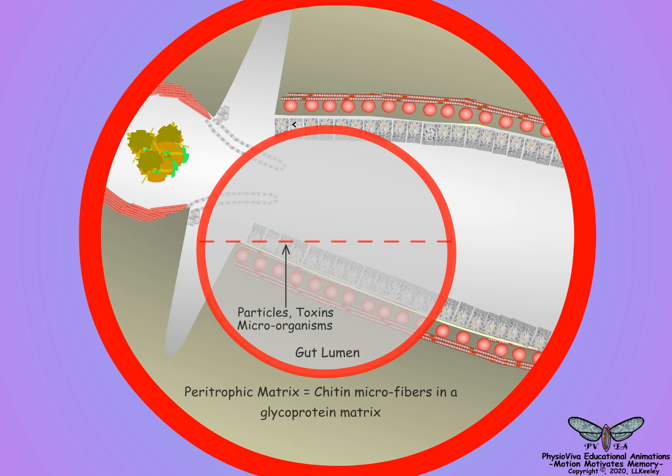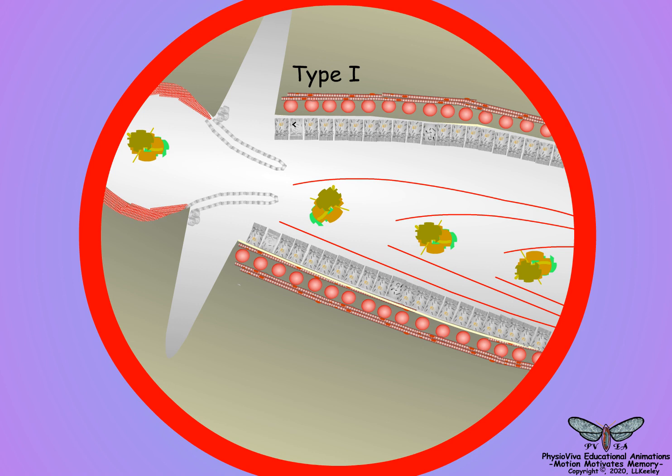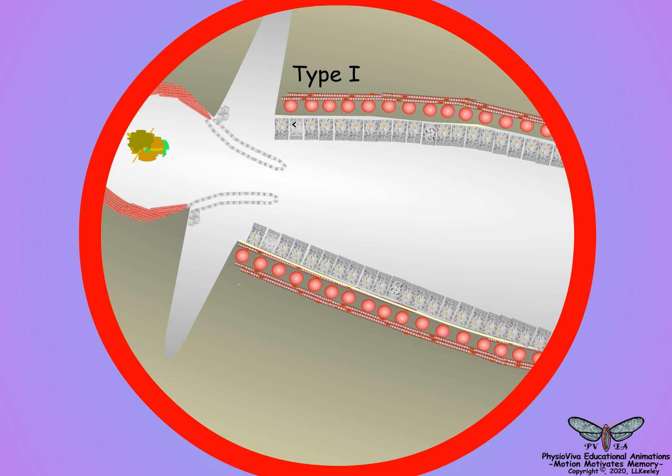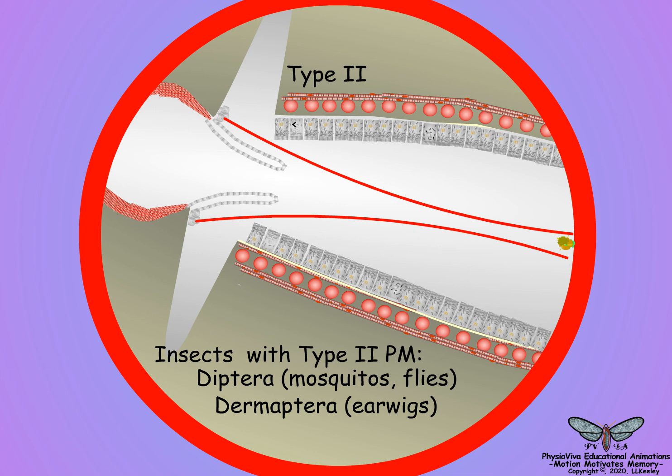There are two types of peritrophic matrix. Type 1 matrix is found in the majority of insect species and consists of a series of sheets secreted along the entire midgut surface, such that the inner sheet surrounds the food and moves along with the food bolus as it progresses through the midgut. Type 2 matrix is secreted by specialized cells located in the anterior midgut behind the stomodeal valve, and forms a single continuous sleeve lining the entire lumen of the midgut.